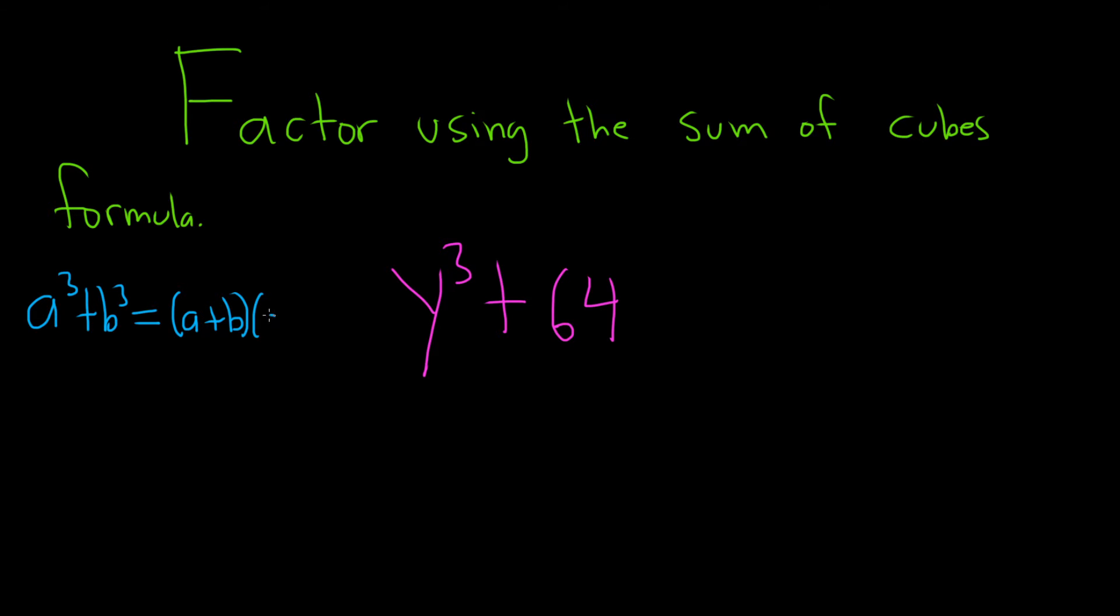And I know it's a², and it's the opposite sign. So it's minus ab, and then you keep the plus sign, b². It's always plus at the end. So that's the sum of cubes formula.